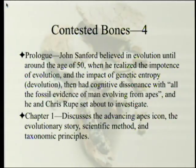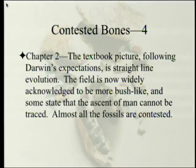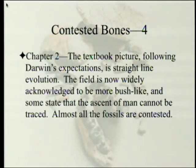Chapter one discusses the advancing apes icon — that familiar ape-to-man transition that was painted with very little evidence — the evolutionary story, the scientific method, and taxonomic principles, kind of setting the stage. Chapter two gives the textbook picture, which follows Darwin's expectation and is in fact straight-line evolution, although the field is now widely acknowledged to be much more bush-like. Some in the field, including evolutionists, state that the ascent of man cannot be traced. Almost all of the fossils are contested, and one or more of the contesting parties are compatible with the theory that Roop and Sanford propose at the end.